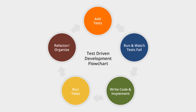The pictorial representation of test-driven development looks like this. First, we add a test. After getting the logic, we add the test, then run and watch — the test will automatically fail because the logic is not yet present. We then write the code and implement it, and run the test again. If it passes, we refactor and organize the code to make it cleaner, and run the test again. If all tests pass, we're done. If any test fails, we change the code to make the test pass, and the same process repeats. This is the TDD flowchart.